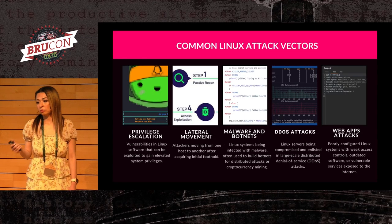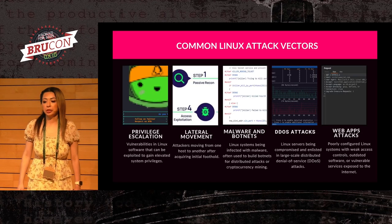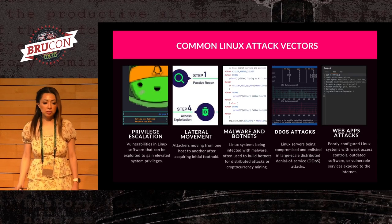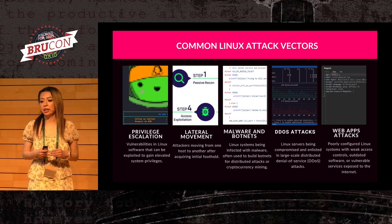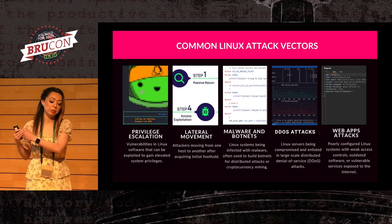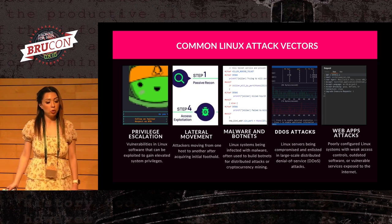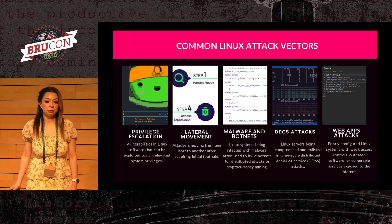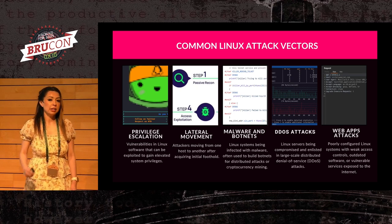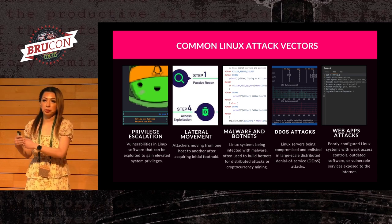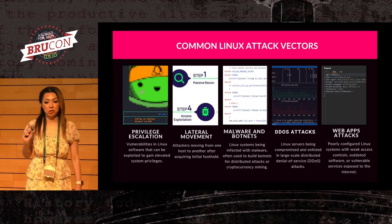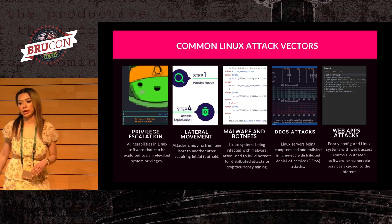Common Linux attack vectors — these are potential ways that an attacker could get us. Privilege escalation: these are types of vulnerabilities in Linux that can be exploited to give you higher privileges — kernel exploits, misconfigured sudos, setUID and setGID, anything that gives elevated privileges. Weak file permissions is another really important one to look at.